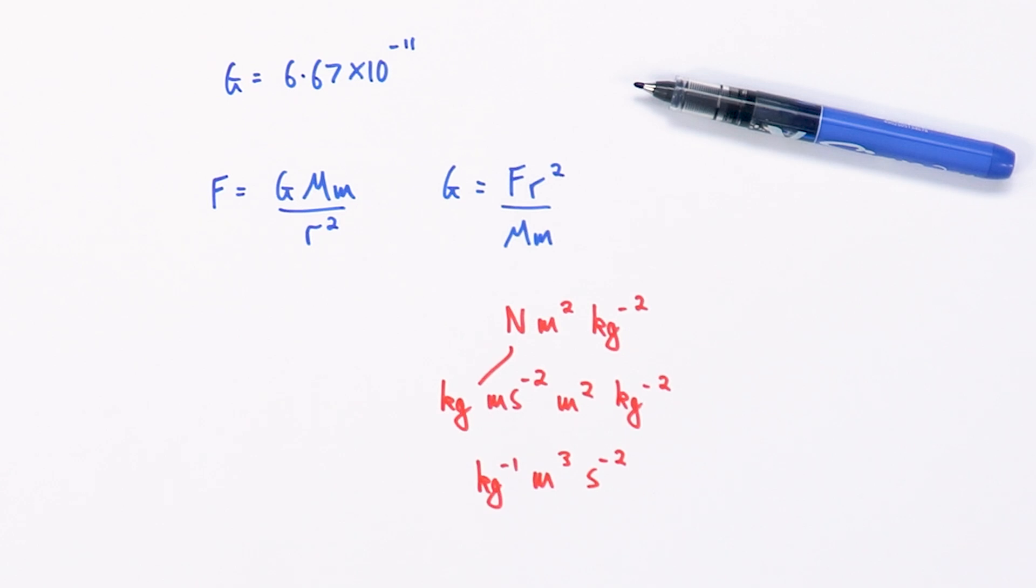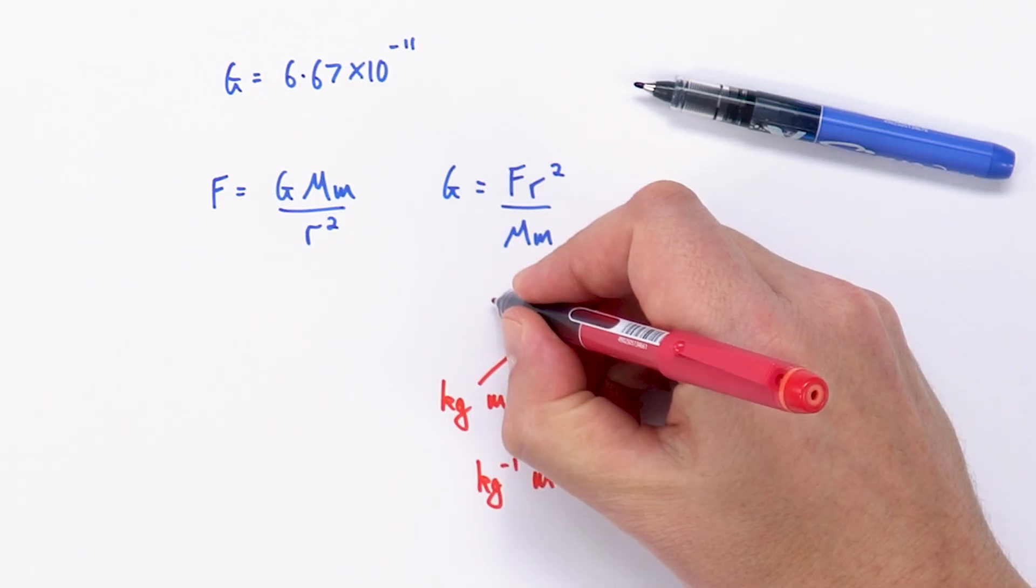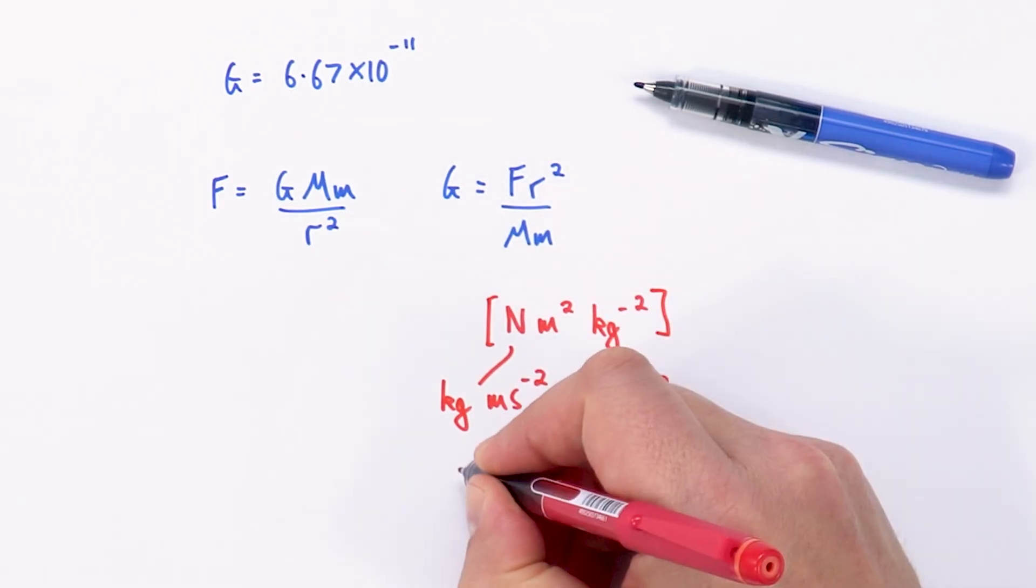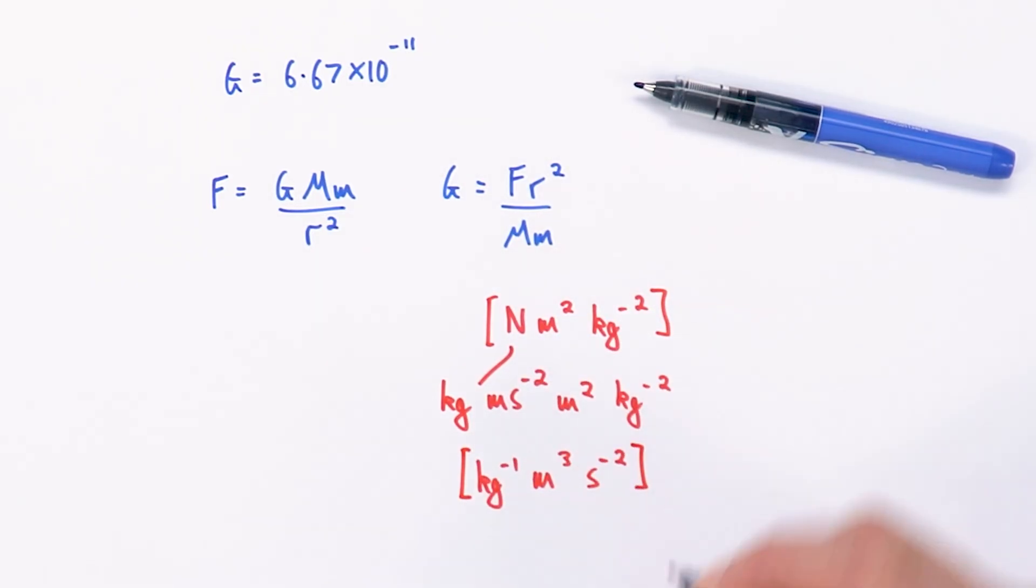In terms of the order I don't think there's a particular order it has to be in but I think that that's you know that's the right kind of base units. So it's either going to be this or it's going to be this as a way to express the units for big G.